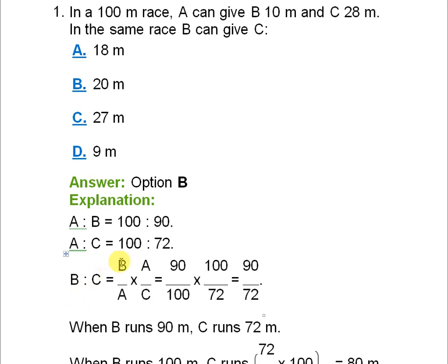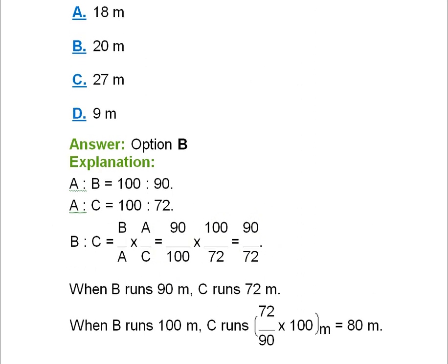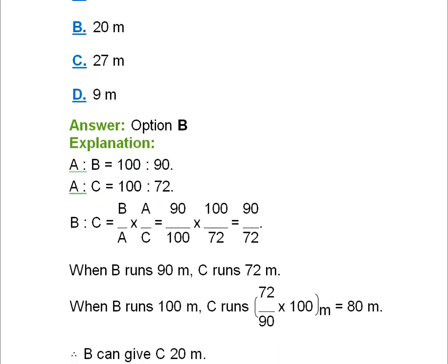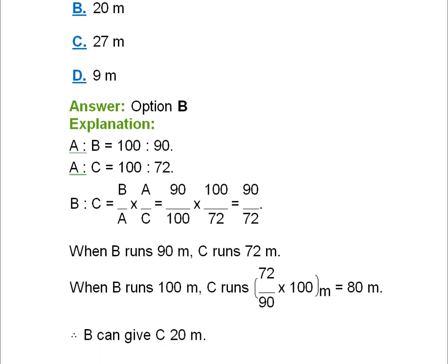B:C equals (B/A) × (A/C). We know B:A is 90/100 and A:C is 100/72. The 100s cancel, giving us 90/72. So when B runs 90 meters, C runs 72 meters. When B runs 100 meters, C runs (72/90) × 100, which equals 80 meters. Therefore B can give C 20 meters — option B is the answer.